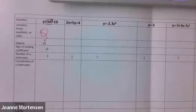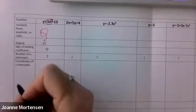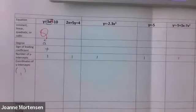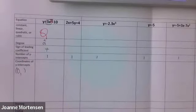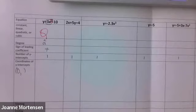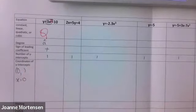Yesterday we had the graph and it was easy to look and see where it crossed the y-axis. Now I'm just giving you the equation and we have to calculate the coordinates of the y-intercept. When you do a y-intercept, you don't know the y number but the x number is always zero. Remember: y-intercept, x equals zero. Always.